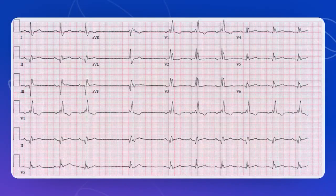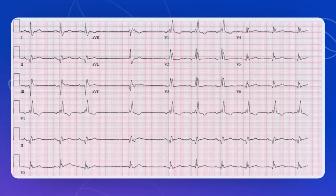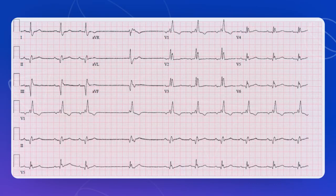On the second ECG: right bundle branch block — QRS complex more than 120 milliseconds, more than three small squares. Look at the RSR pattern in V1, that confirms right bundle branch block. Next, check the axis: lead one is up — that's okay. Lead two is predominantly downwards — that's left axis deviation. So we've got right bundle branch block and left axis deviation: that's bifascicular block.